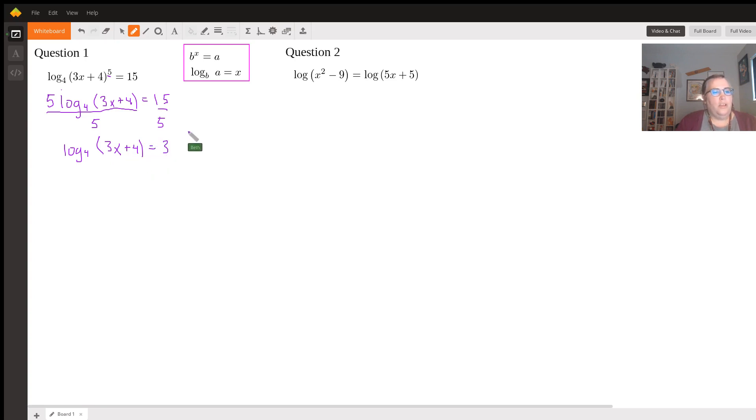Now we're going to look at this information. If you remember the definition of a logarithm, log base b of quantity a equals x means the base to the x power, the exponent, is a. So we're going to rewrite this. We have 4 to the third - this is the base, this is the exponent - equals 3x plus 4.